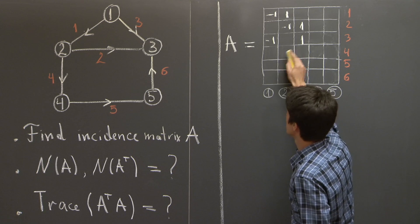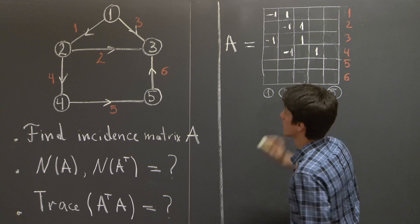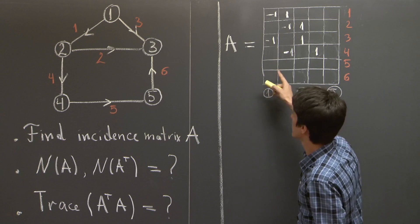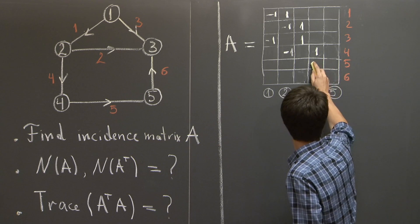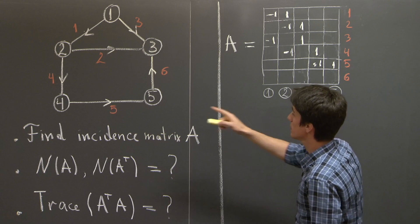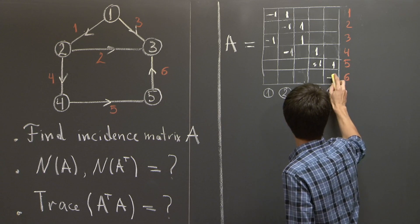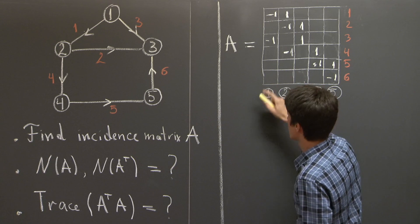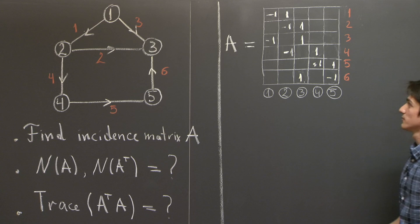4 is negative 2, negative 1, 1. 5 is negative 2, well, negative 4, 1 here, and 6 is 1 and 1. OK, so we've constructed the matrix A.